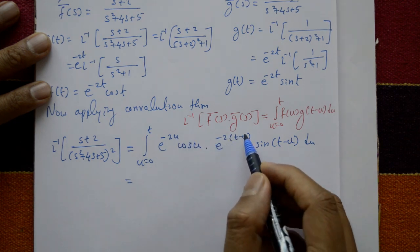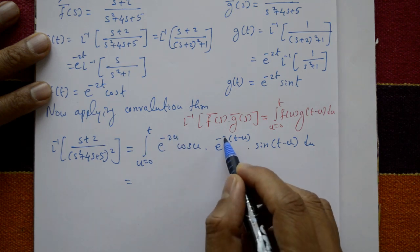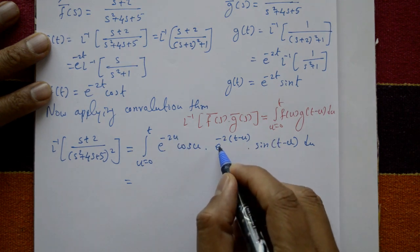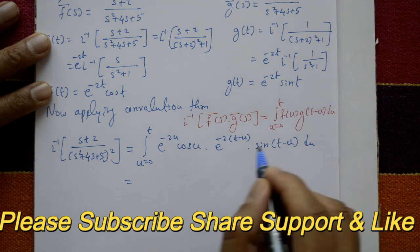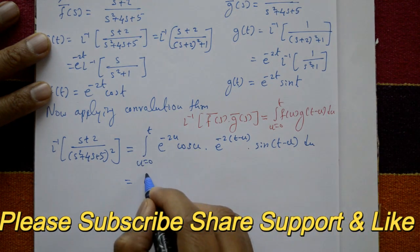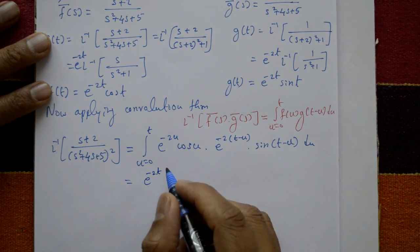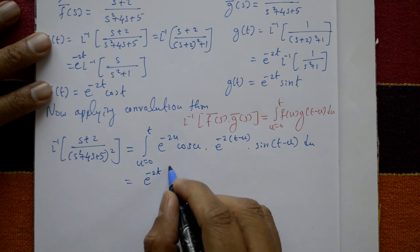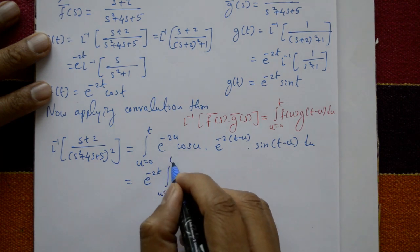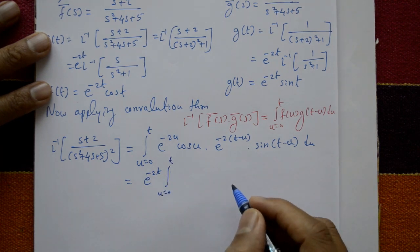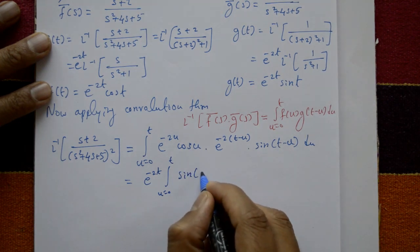Simplifying the exponentials: e^(−2u) · e^(+2u) cancels, leaving only e^(−2t). This constant is taken outside the integral, giving e^(−2t) times the integral from 0 to t of sin(t − u) cos(u) du.